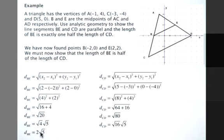The root of 4 we know is 2, so the length of BE is equal to 2 root 5. The root of 16 is 4, so the length of CD is equal to 4 root 5.